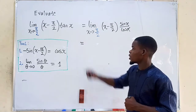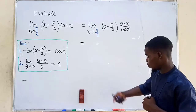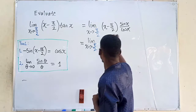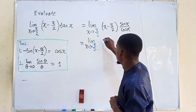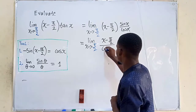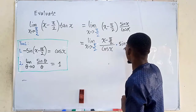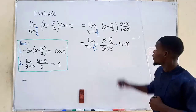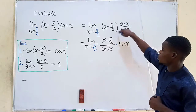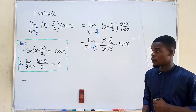The next thing we'd like to do is rewrite this function. We'll have (x minus π/2) divided by cosine of x, times sine of x. We kept sine where it was and pushed cosine — since this is just a product — to the denominator of (x minus π/2).